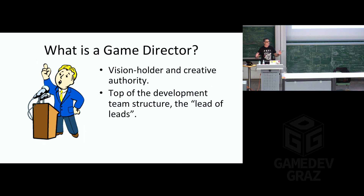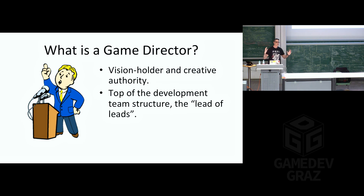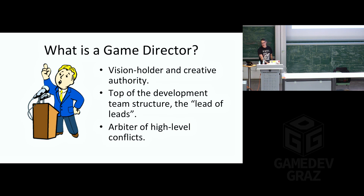In terms of the development structure and the team structure, the game director is considered to be at the top in terms of authority. Every team has leads, and the director is the lead of the leads. In addition to your lead programmer, lead artist, and lead designer, you also have a game director who is above them in terms of resolving conflicts and making decisions. They're the arbiter of high-level conflicts. When the programming lead disagrees with the design lead, if they can't resolve it on their own, then the director comes in to give them direction, explain why making one decision or another is important, and then move the team forward.